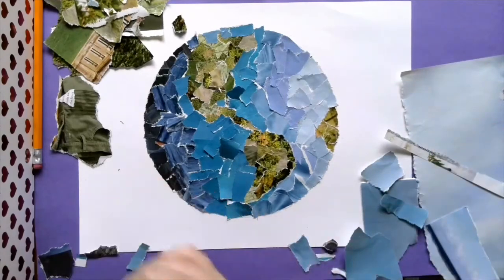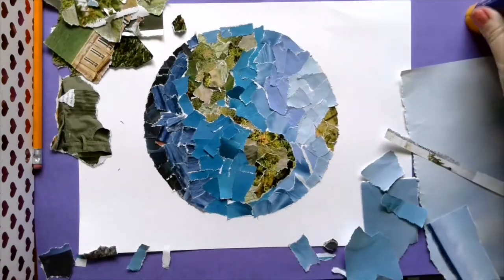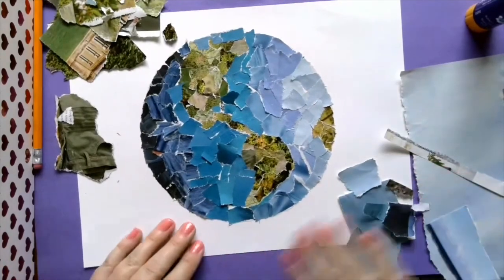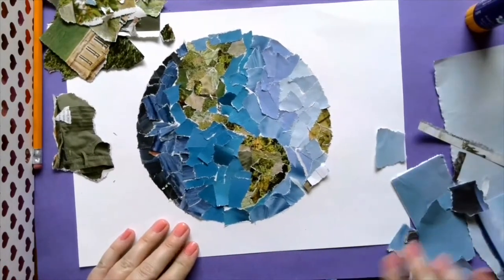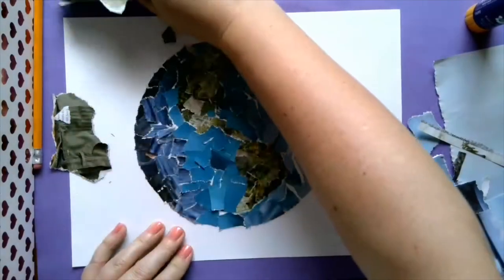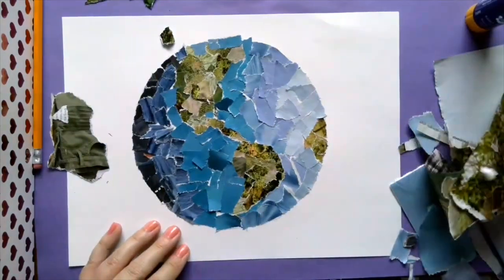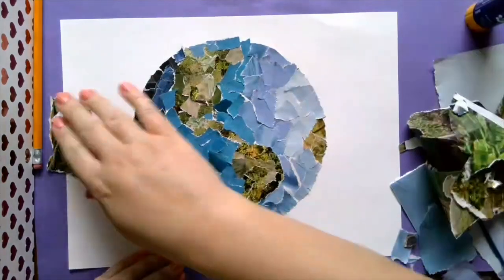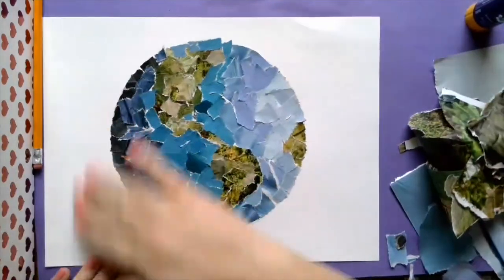Once you get to this part, you are done gluing for the day. You need to just clear all your scraps to one side to go into the recycling bin later. The best part about this activity is that we are totally recycling materials. The only thing that is new is our background piece of paper, but really you could use newspaper to do it on.